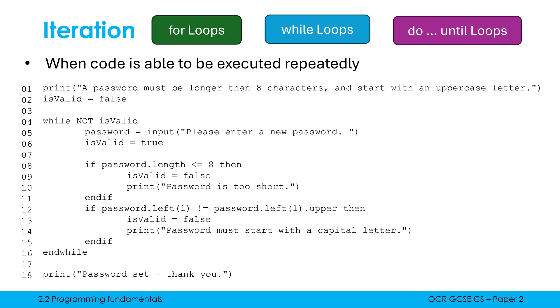Well, we get a print line initially, password must be longer than eight characters and start with an uppercase letter. isValid is set to false. So therefore, while not isValid, while not false is true, so the loop runs. We're asking for a new password. Let's say we type in 'hi' with a lowercase h.